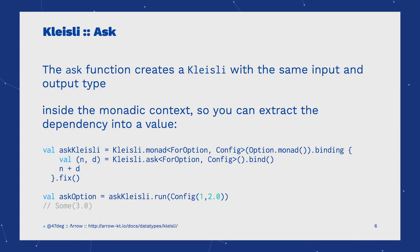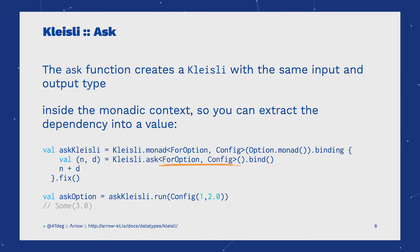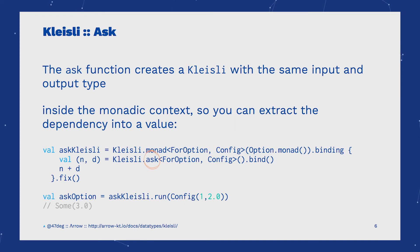The ask function creates a Kleisli with the same input and output type inside the monadic context. So if we don't need to change to another output type, we use ask to get the same type inside the monadic context.